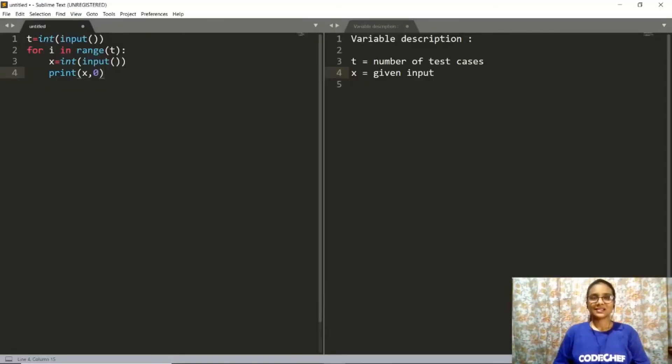Alright, so now quickly discussing the code. Well, there is nothing much to discuss in the code. As you can see the first few lines are the input like first line is the input for number of test cases then we have run a loop for each test case and we are taking input for x, the integer that was given to us. And then we already know that our answer will always be x and 0. So we have printed our answer as x comma 0. So comma will ensure that we have a space in between the two numbers. So a will be x and b will be 0.